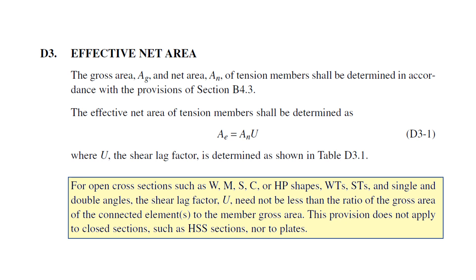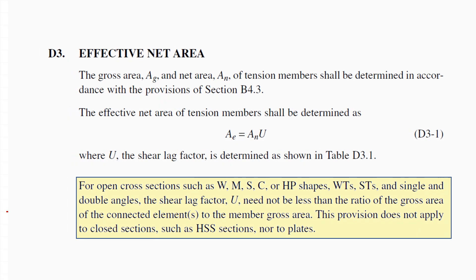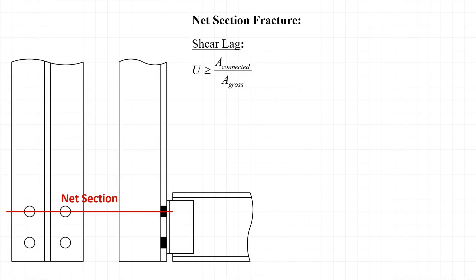WTs, STs, single angles, etc., the shear lag factor U need not be less than the ratio of the gross area of the connected element to the member gross area. That means that U, the shear lag reduction coefficient, doesn't have to be taken as any less than the area of the connected elements divided by the gross area of the section.